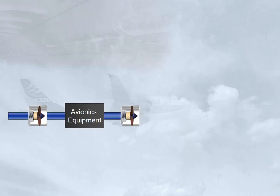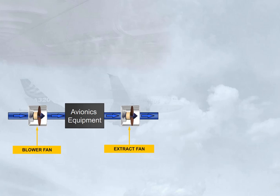Air is circulated by two fans: a blower and an extract fan. These fans operate continuously as long as the aircraft electrical system is supplied. Note, the operation of the avionics ventilation system is controlled and monitored by an avionics equipment ventilation controller, AEVC.